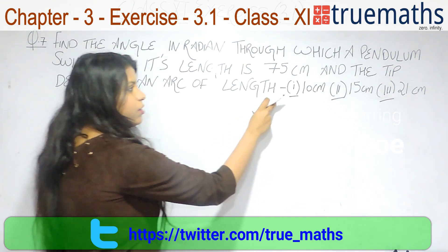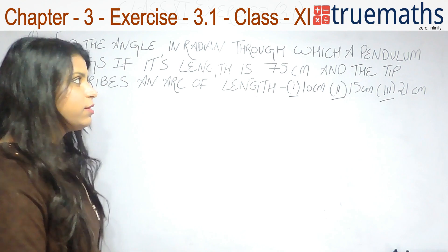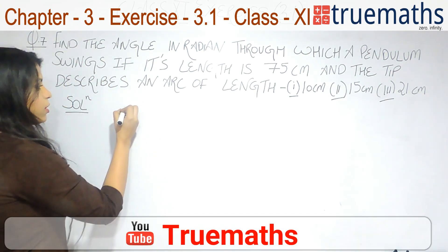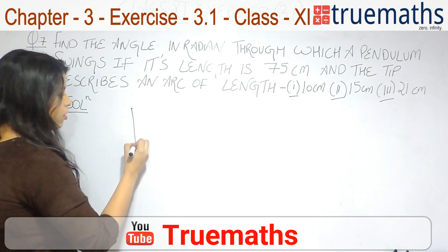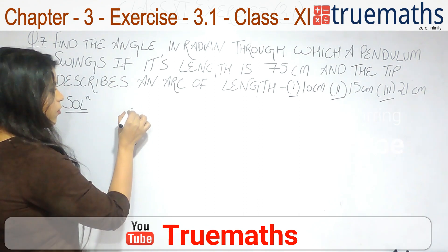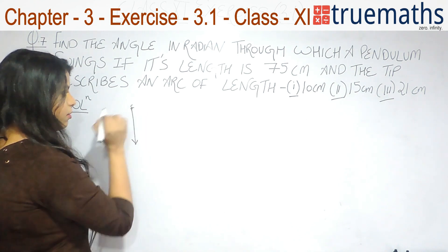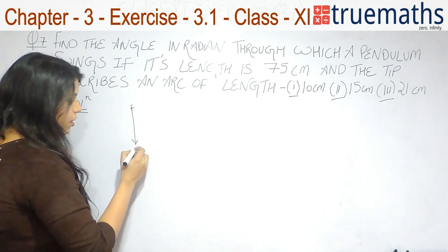Before solving these parts of the question, I want you to understand what the question is trying to say. Now there is a pendulum. Suppose the tip of this is a pendulum and the point of suspension of this pendulum is C and the tip is A.